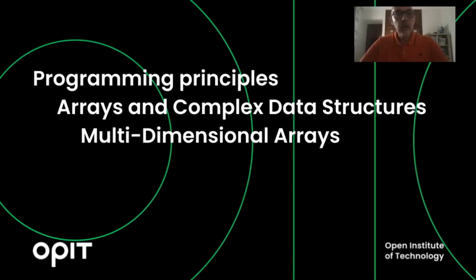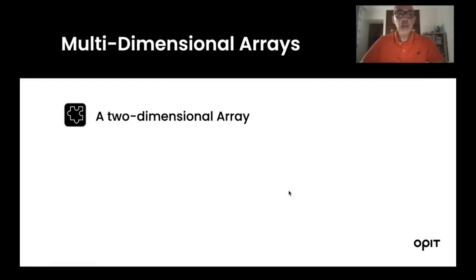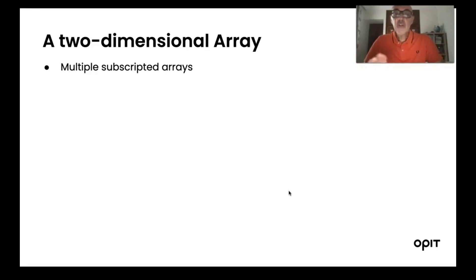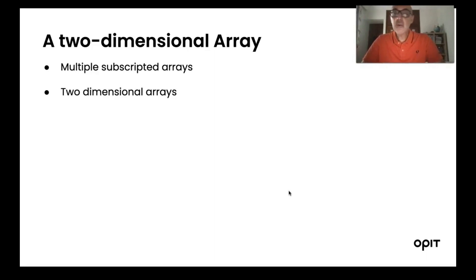In the previous lesson we considered one-dimensional arrays. Today we are going to consider what is called multi-dimensional arrays. To start with, we will see only a two-dimensional array and explain it. We have seen that an array is defined with a name, a type, and one subscript, but it is possible to have multiple subscripts. For the moment we are going to concentrate only on two-dimensional arrays, since once you understand the concept it becomes very easy to extend to 3D arrays, 4D arrays, etc.